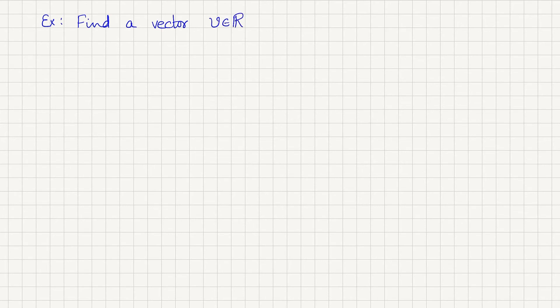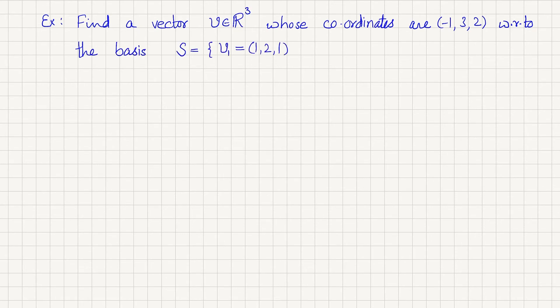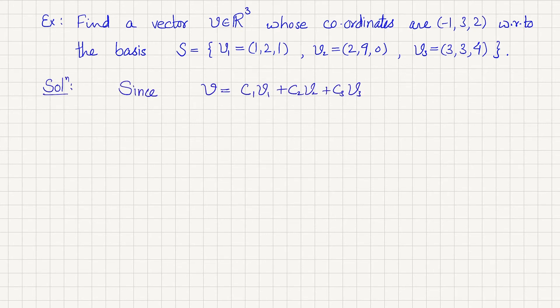Now suppose the coordinate vector is given to you and the basis is also given — how will you calculate that vector? This is very easy. The vector V comes from R3 and the set S is the basis, so any element can be expressed as the linear combination of the elements in the basis, where c1, c2, c3 are the coordinates which are given to you. Just put these values in to find the vector.